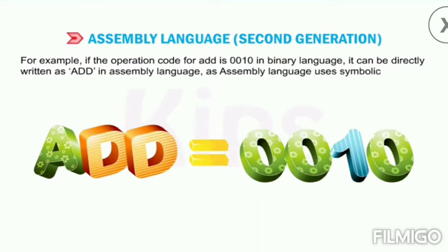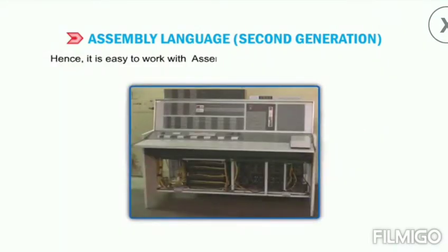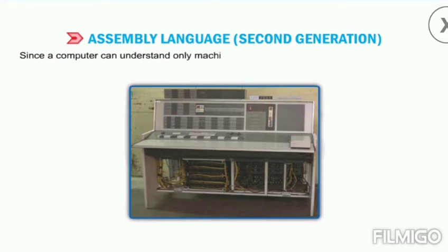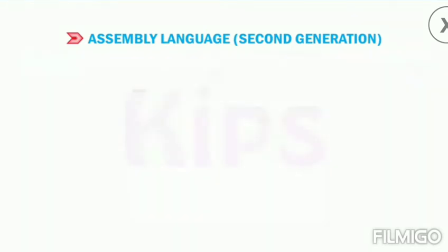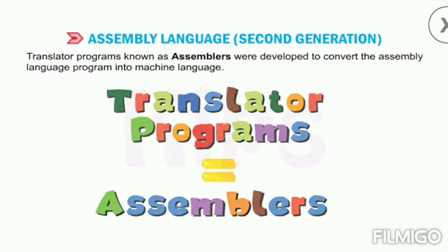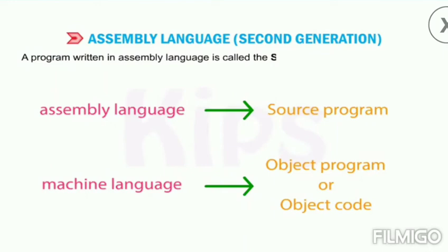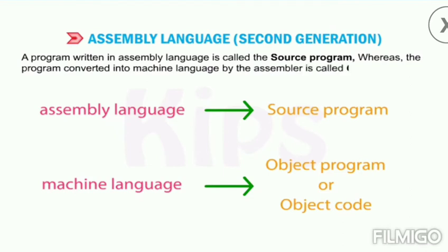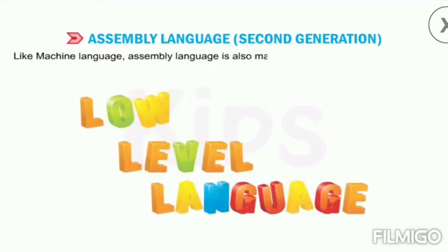Since assembly languages use symbolic codes, it is easy to work with assembly language compared to binary language. However, since a computer can only understand machine language, assembly language programs have to be converted into machine language. Translator programs known as assemblers were developed to do this conversion. A program written in assembly language is called the source program, whereas the program converted into machine language by the assembler is called the object program or object code.